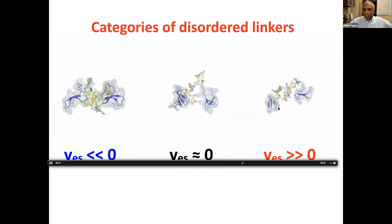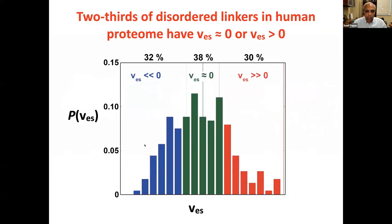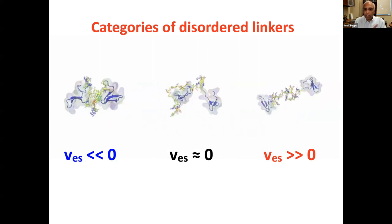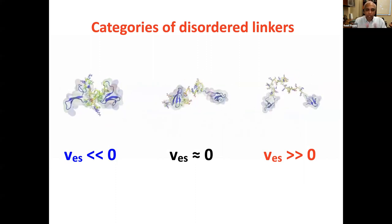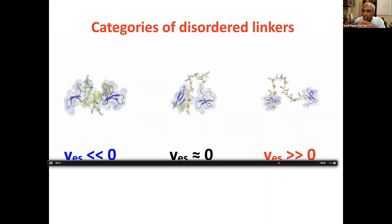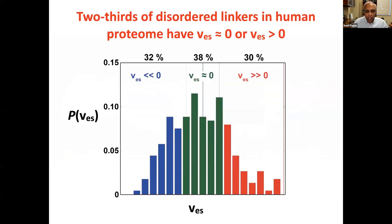It's easier to show in a movie: between two SH3 domains, linkers of different categories are shown. High positive effective solvation volume linkers are quite expanded; those that are agnostic make rapid fluctuations into and out of expanded and compacted conformations; while very sticky linkers basically form folded-domain-like structures. Alex and Tyler then went through the human proteome of IDRs, focused on IDRs that connect folded domains as linkers. What we were expecting to find was that all linkers are exactly the same — but in fact, that's not the case.